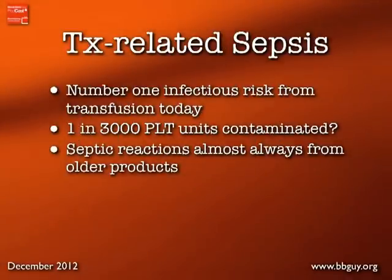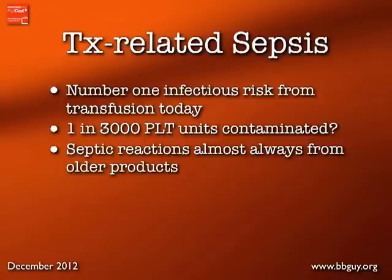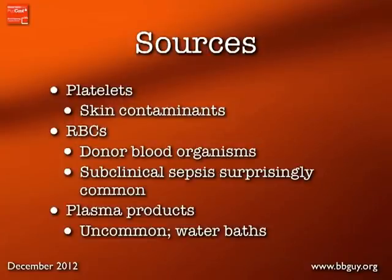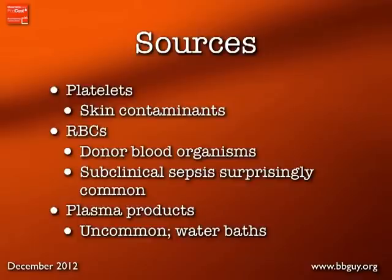Now let's talk about transfusion-related sepsis — the number one infectious risk from transfusion today, much more common than any of the viruses we've discussed in previous podcasts. It's been stated that 1 in 3,000 platelet units are contaminated, though most contaminated units do not actually cause reactions. It can happen from skin contaminants — most commonly with platelets — or from the donor having organisms in their blood (subclinical bacteremia), which is surprisingly common.